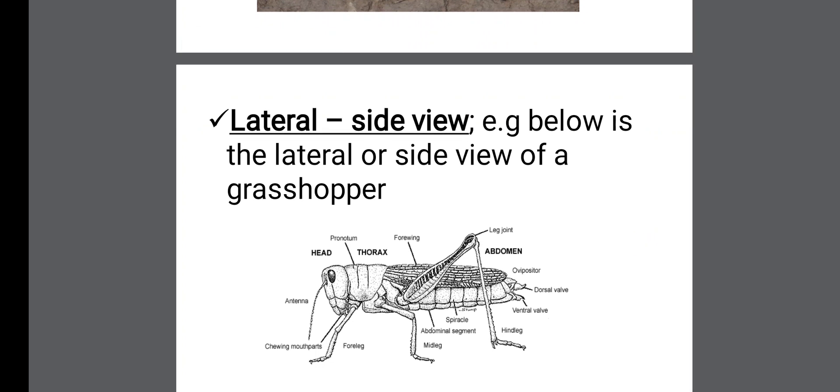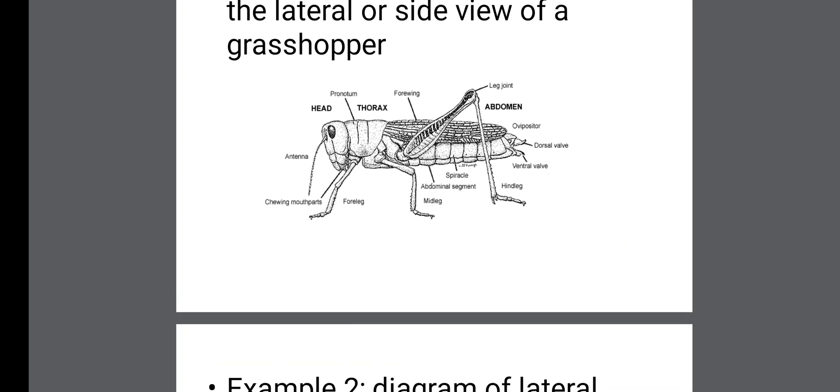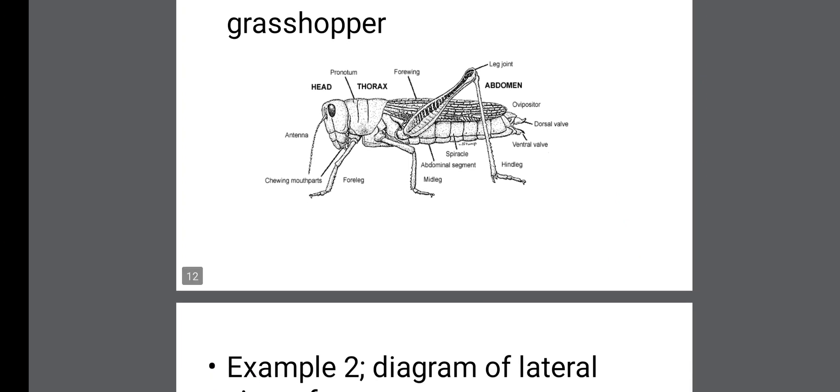The next one is the lateral. Lateral means side view. Example is given below: the lateral or side view of a grasshopper. It means whatever you are asked to draw the lateral view of, this is where you should actually view it from. From the side. It can either be the left side or the right side. You view it laterally by the sides, exactly this direction. You draw fully and label.